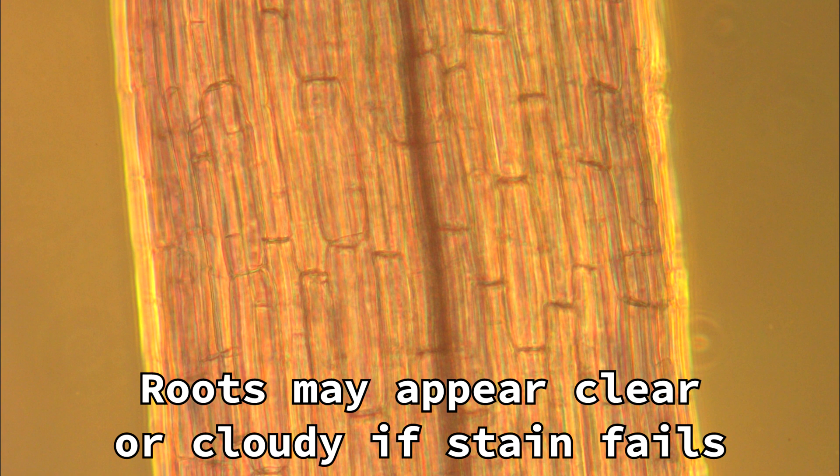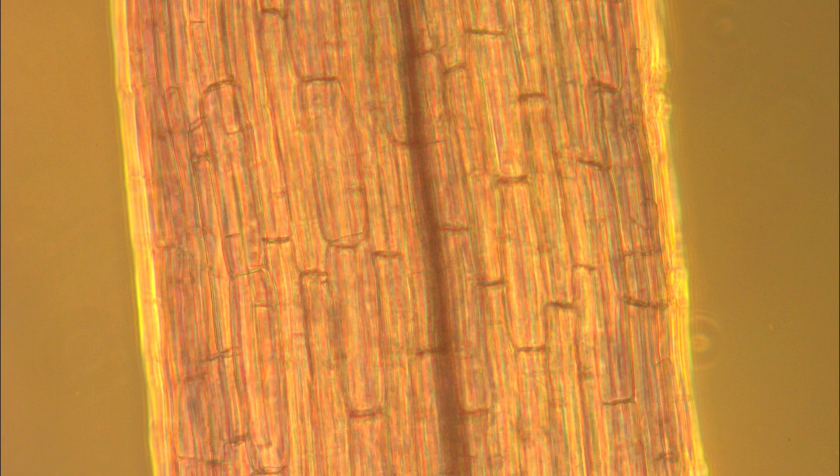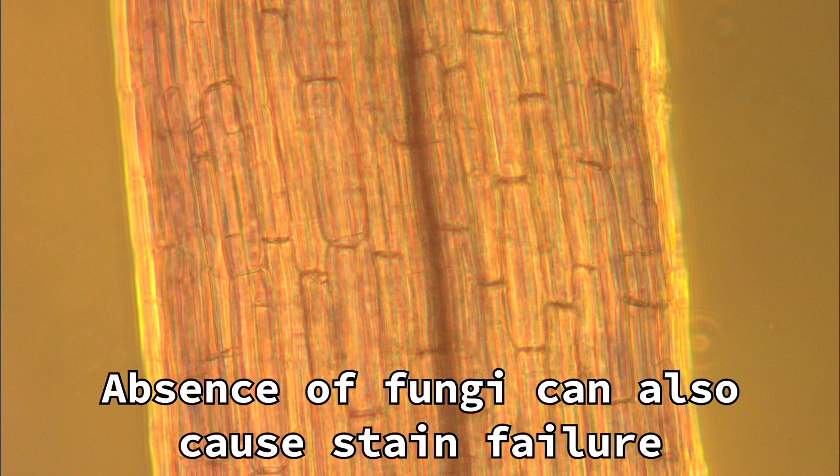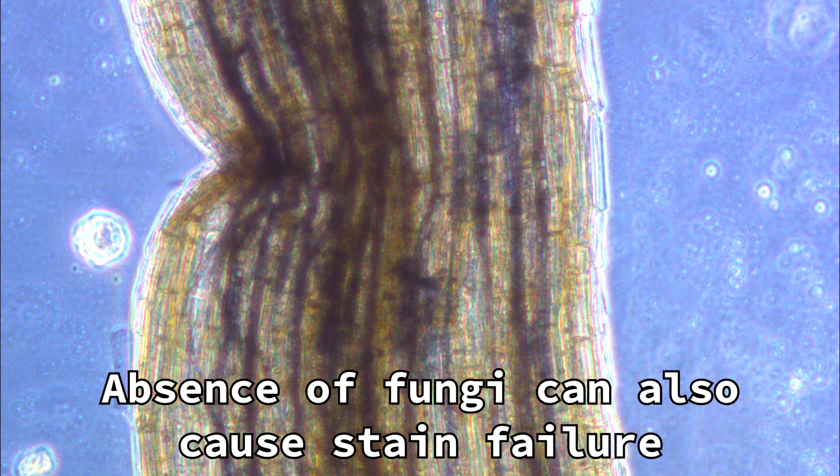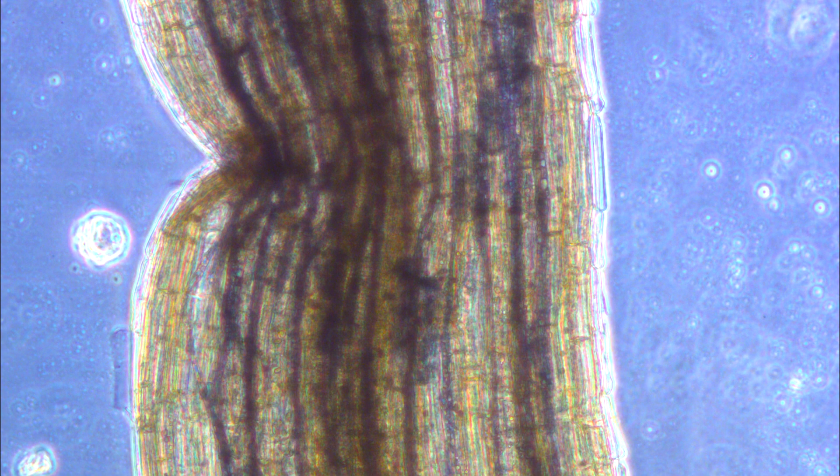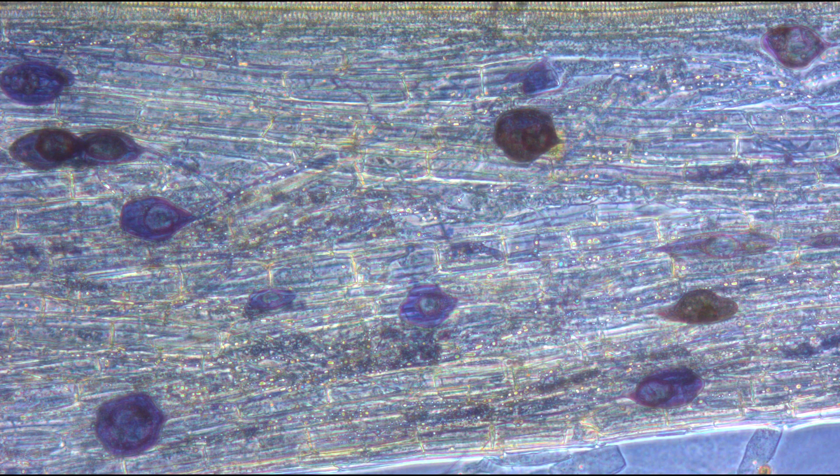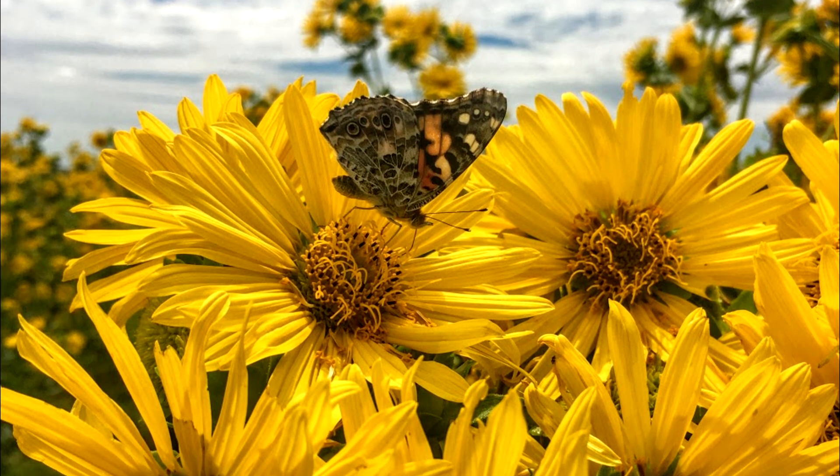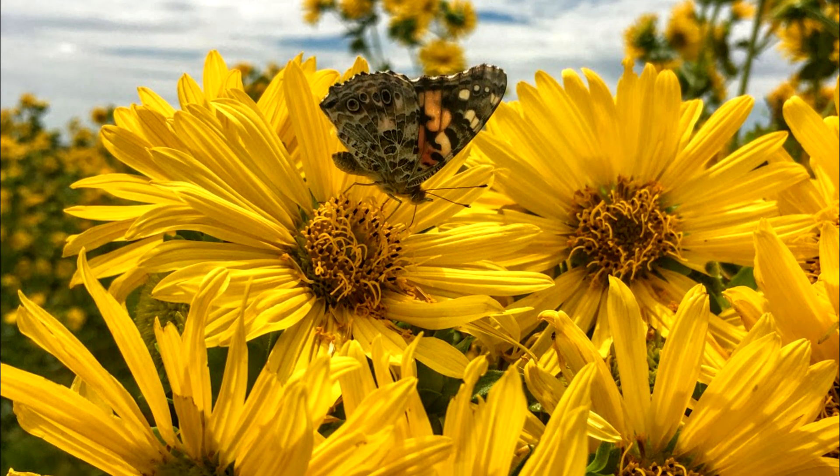If a stain isn't effective, the roots will appear clouded or the fungal structures will be faint or entirely absent. However, a clear root may also be because the root has no AMF, so make sure you look at a few different root sections before evaluating whether or not the stain worked. Like with any method, this will require some troubleshooting to make it work for your particular roots.